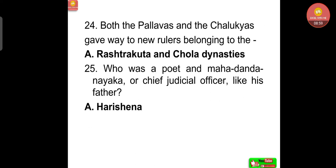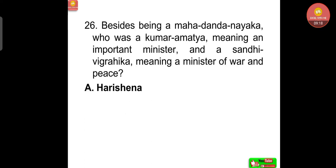We know about Pulakeshin II from a prashasti composed by his court poet Ravikirti — a very important person. Both the Pallavas and the Chalukyas eventually gave way to new rulers belonging to the Rashtrakuta and Chola dynasties. Harishena was a poet and Mahadandanayaka (chief judicial officer), like his father. Besides that, he was also a Kumaramatya (important minister) and a Sandhivigrahika (minister of war and peace) — all these titles and responsibilities belong to Harishena.